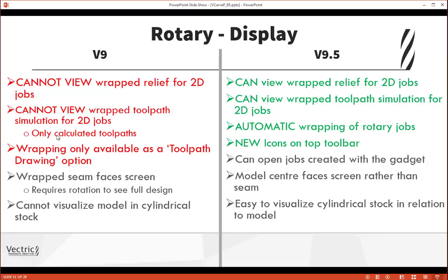It will automatically wrap the relief for a rotary job. There are new dedicated icons on the top toolbar to switch wrapping on and off. You can open jobs previously created with gadgets in previous versions. And when creating text in the centre of a piece, when that's wrapped, the centre of the workpiece will be facing you on the screen rather than the seam, making far better sense. Since we're able to see the cylindrical stock, it makes it far easier to visualize this around the component you're actually working with.